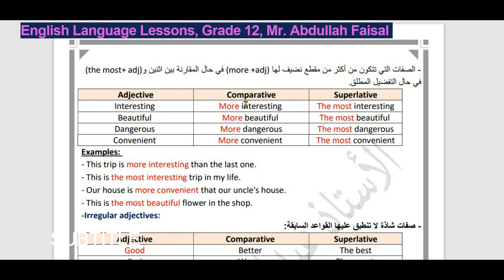في التفضيل المطلق نضيف the most. مثلاً: more interesting, the most interesting. وكذلك: more beautiful, the most beautiful. وكذلك: dangerous → more dangerous, the most dangerous. وكذلك: convenient يعني ملائم ومناسب → more convenient, the most convenient.